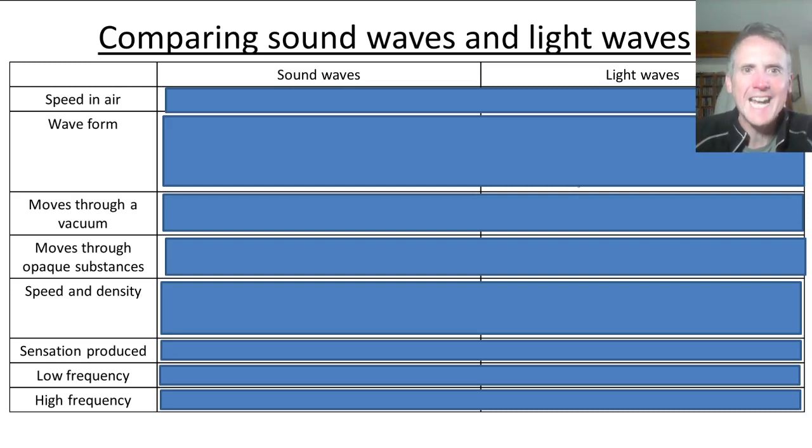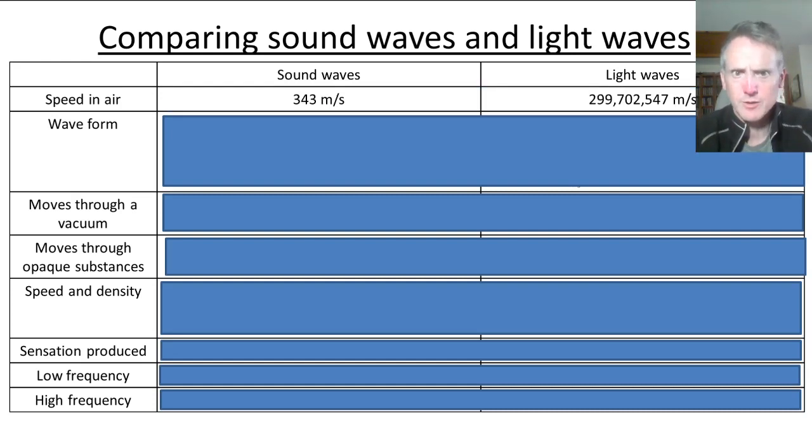So comparing sound waves and light waves, speed in air. You don't need to know the exact numbers. It's handy to know. But you need to know which is faster. If there's a storm going on, I see a flash of lightning and then I hear a rumble of thunder. And I can gauge how far the thunderstorm is away by counting from when I see the flash. So I see the flash and I then go one one thousand, two one thousand, three one thousand. And apparently I got to three one thousand, that's about three miles away. So sound waves must be slower. They are 343 metres per second. Still fast, but a lot slower, whereas light waves are almost a million times faster. 299,702,547 metres per second. So a lot, lot faster.